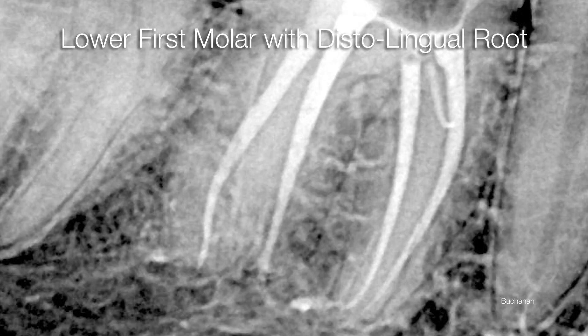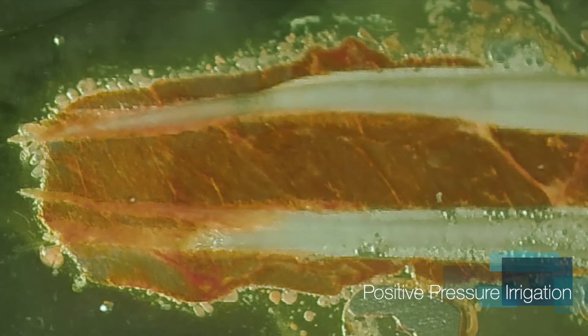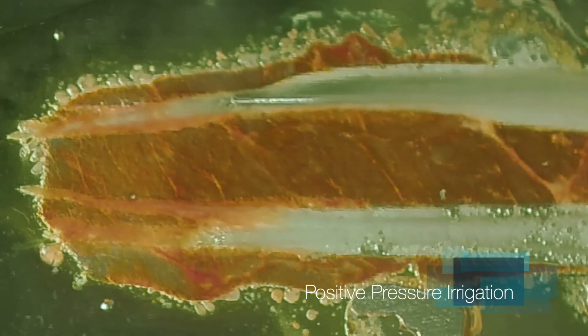All three of these small molar canals were instrumented with just the single 1306 traverse rotary negotiating file by Kerr Endodontics. Now back to the previous block.